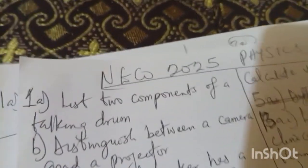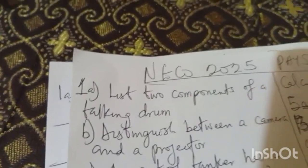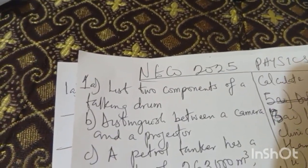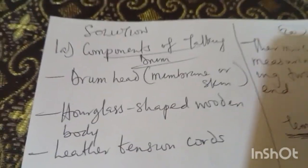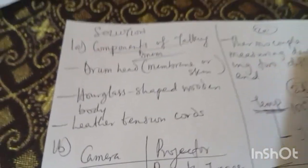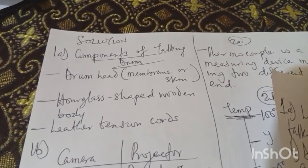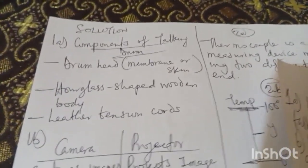Before I go to section A, note that you have to answer number one compulsory and any other four. Now this question you are seeing here is talking about the components of a talking drum. In my response, component one is drum edge, component two is the hourglass-shaped wooden body, and three is the tension cord. I've mentioned three - pick any two.